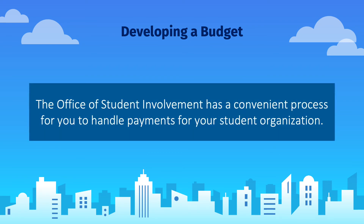The Office of Student Involvement has a convenient process for you to handle payments for your student organization. For most organization categories, visit DHUB and upload the required information to the payment processing form to process contracts, invoices, reimbursements, and more. For club sports, visit DHUB and upload the required information to the club sports contract submission form. While the required information is the same, club sport payments need approval from campus recreation.